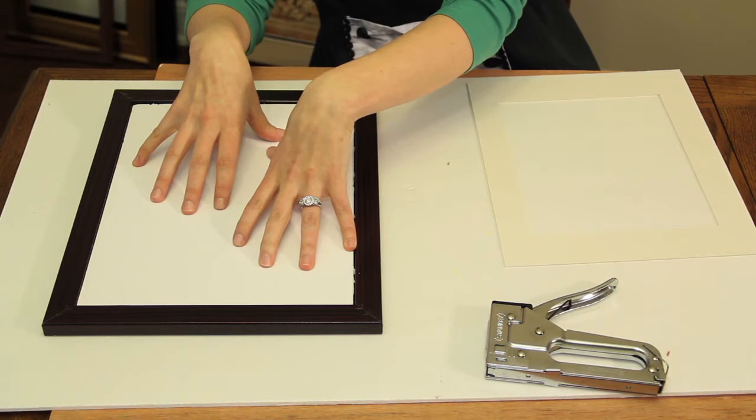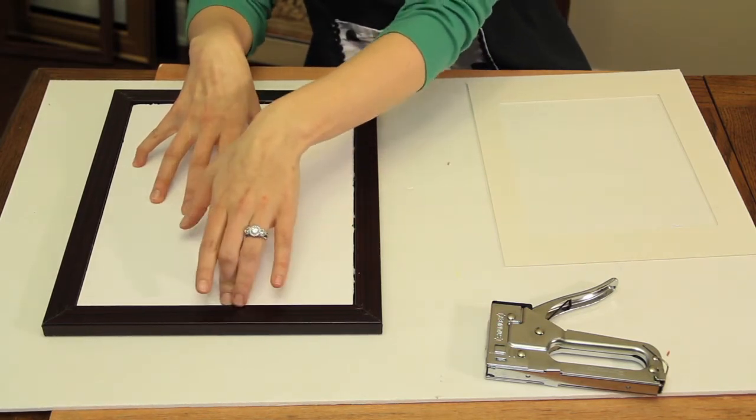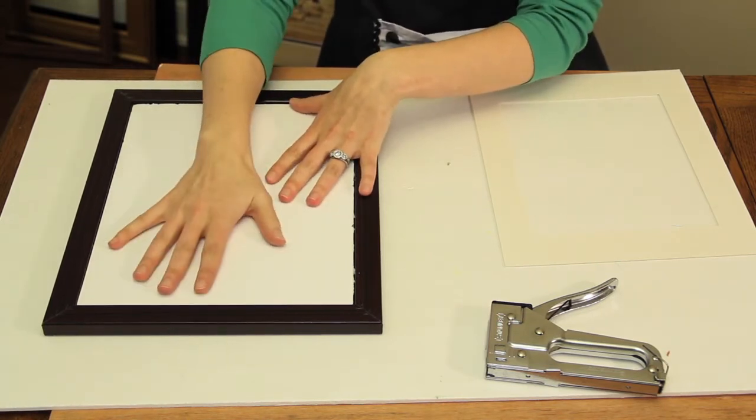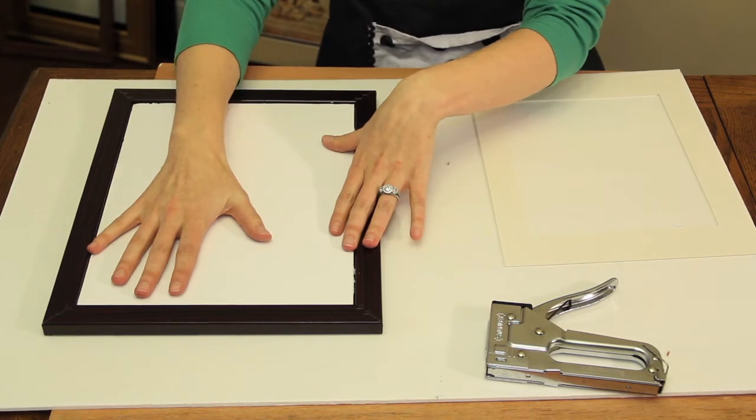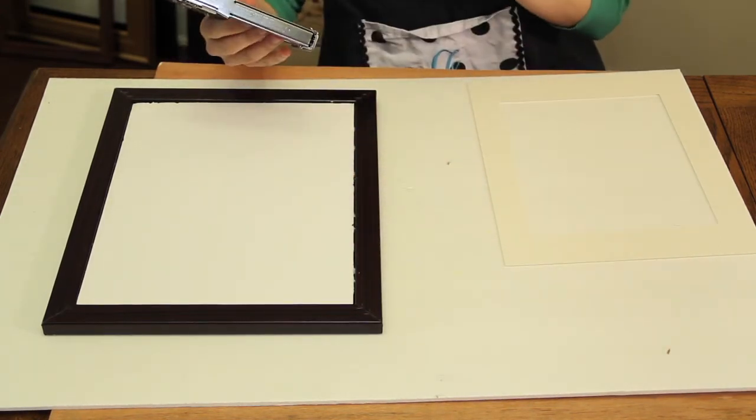I like to use foam board because it has a little give to it, so once you start securing, it's less likely to break your glass. Once you have your foam board in, you take your staple gun, an everyday light duty staple gun.